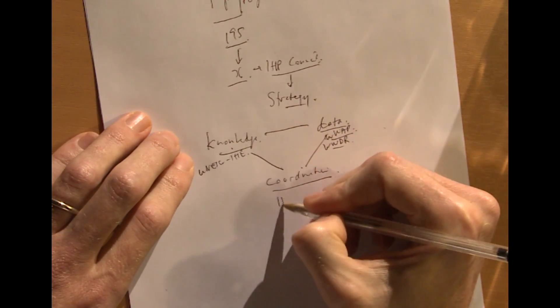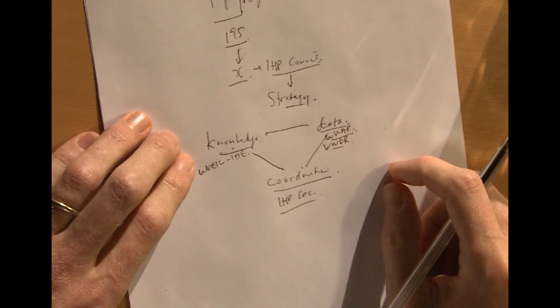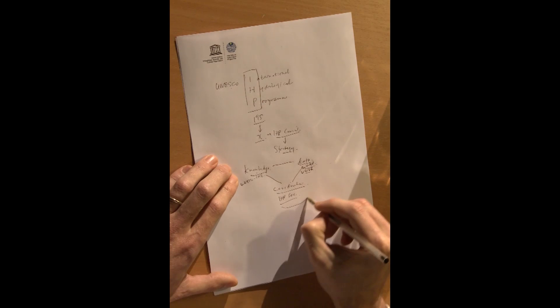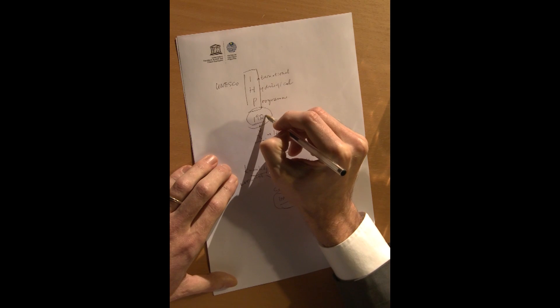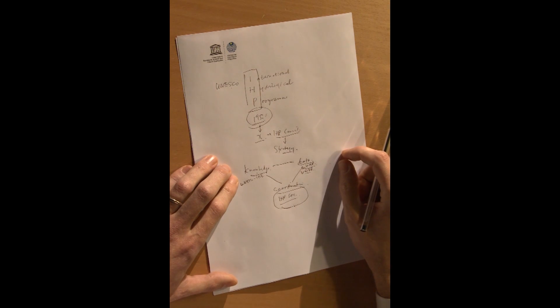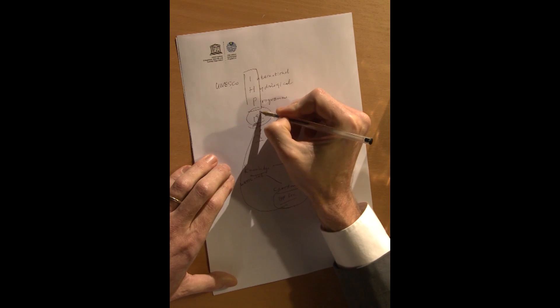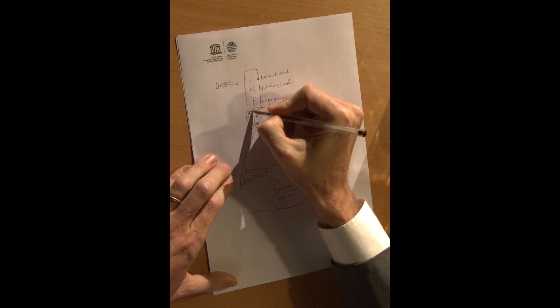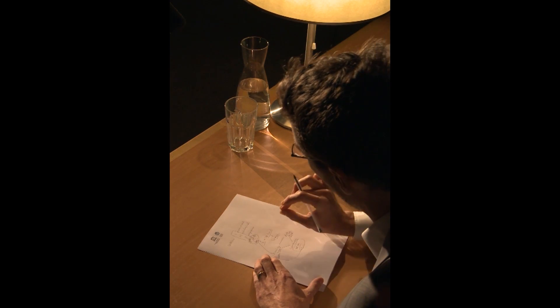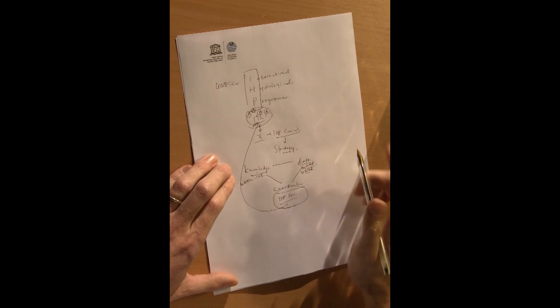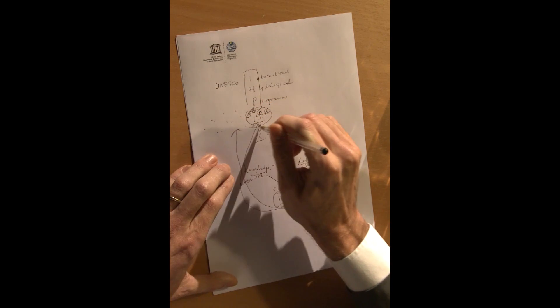The coordination is done by the IHP Secretariat, which is mainly located in Paris at UNESCO's headquarters. This secretariat makes it possible that these 195 member states all over the world work together in the field of water. The secretariat does this by communicating directly to the ambassadors of these countries at UNESCO. These UNESCO ambassadors have offices in Paris, but the secretariat also communicates directly with the water experts in these countries.